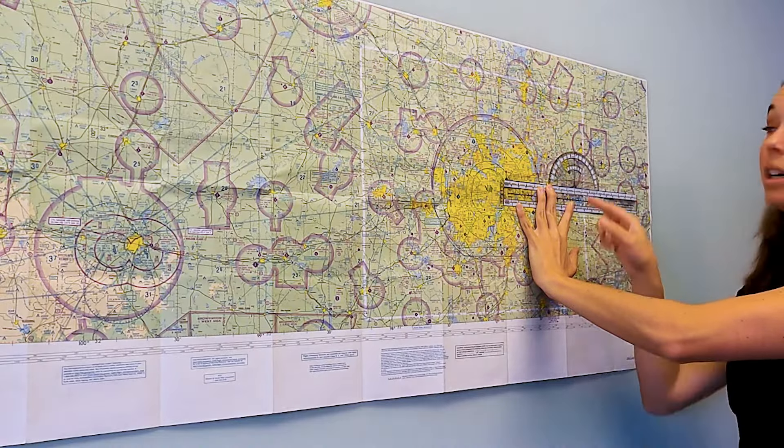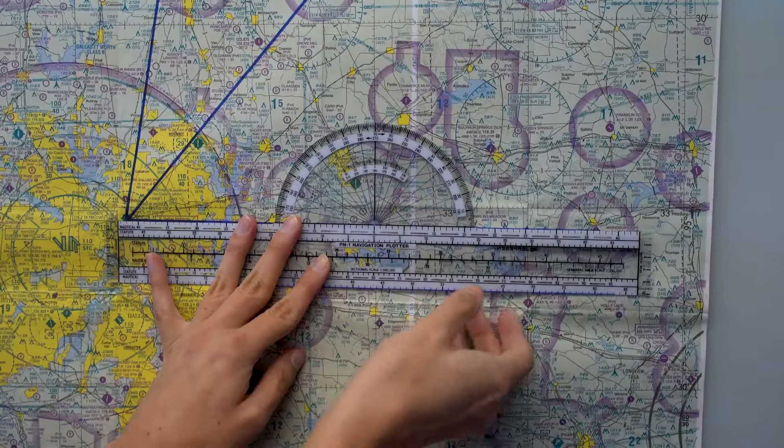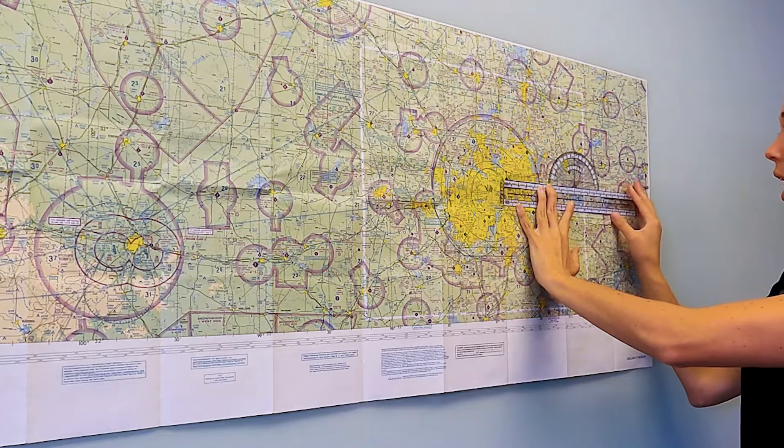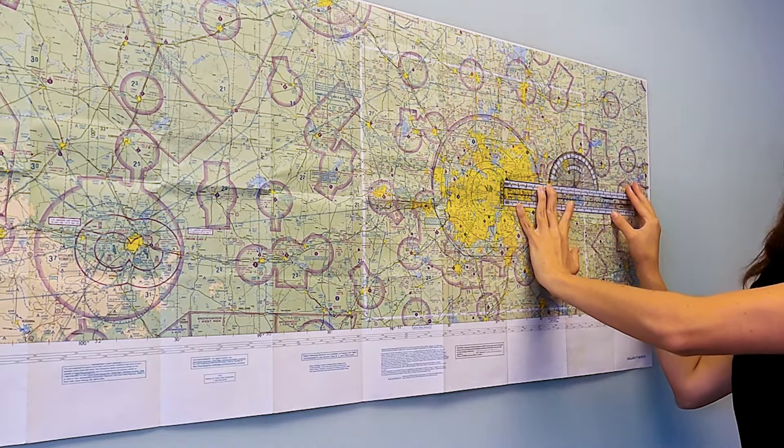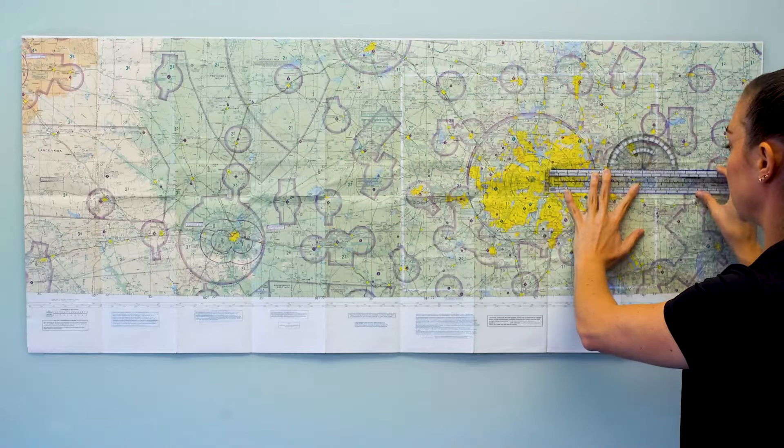Now I can see by using this longitude line exactly which course I need to be flying, which in this case it would be zero nine zero perfectly on. I can show you a different example.